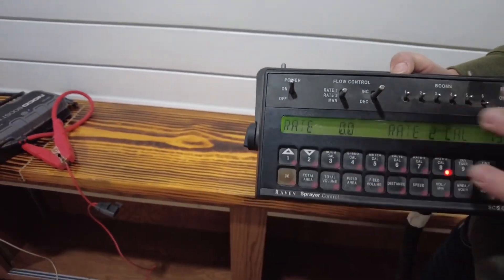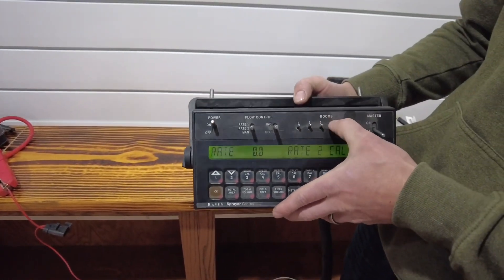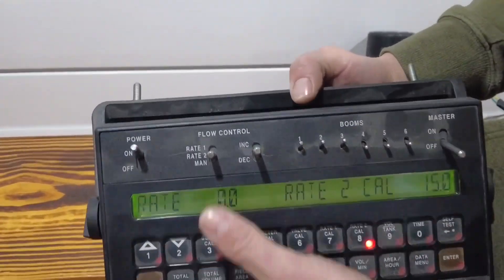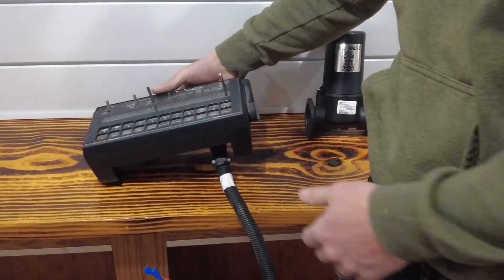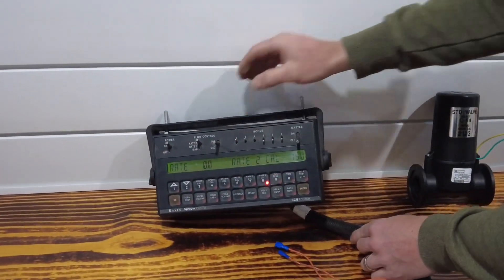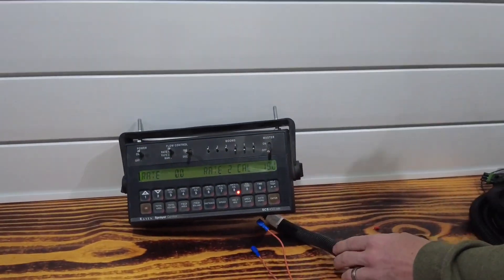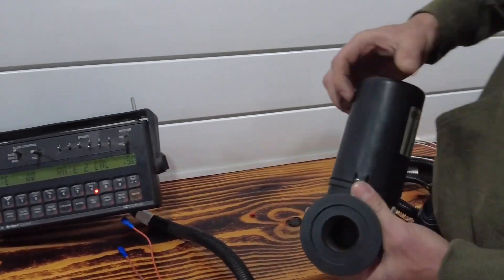I know we're good to go because the flashing cal went away and it's yelling at us. So our rate zero, I've got my three booms on for my three sections. We're going to go to rate one which is 10, and now we're going to see if we can get this valve to move. I don't know if you can see that.